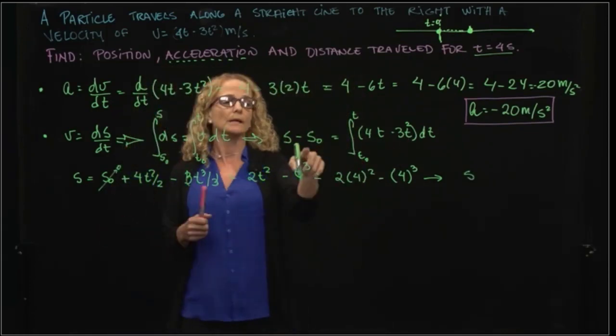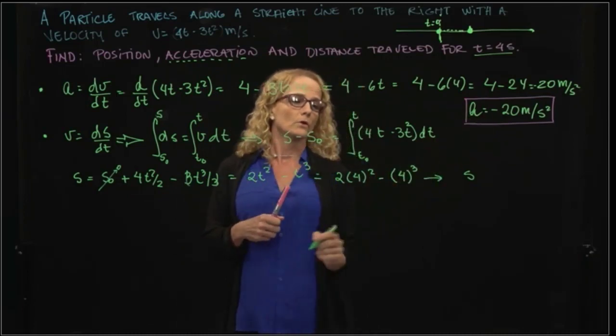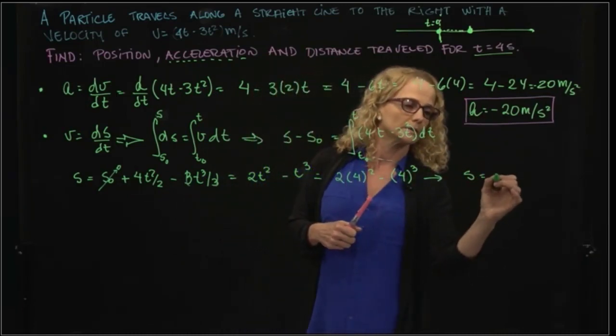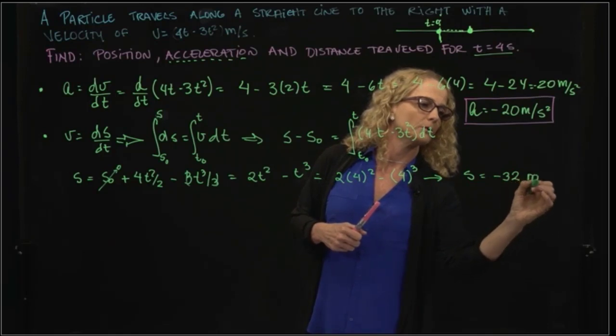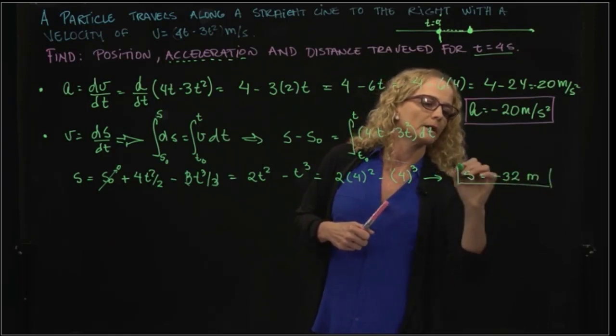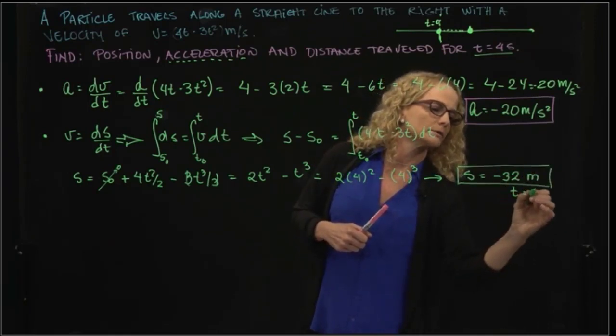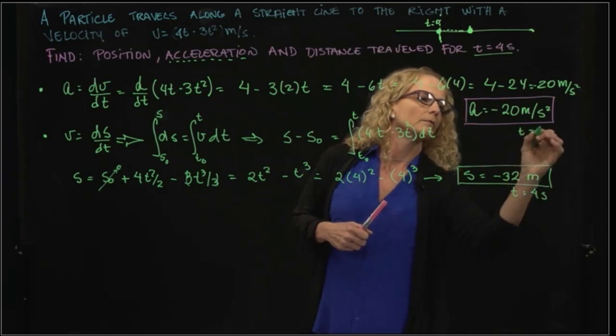We have 4² is 16, times 2, minus 4³, that will give us -32 meters. Our final position for t = 4 seconds.